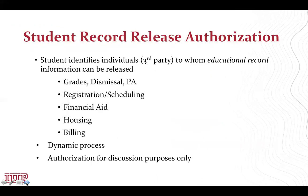How we do this is called the student record release authorization. Think of this as an online electronic permission form where students give permission for a third party person to discuss protected educational information. Access can be given to all or select categories of the educational record regarding grades, dismissal, grade point average, registration and scheduling, financial aid, billing, and or housing. I would like to caution everyone that this is a dynamic process. This means that access can be changed at any time — access could be granted in the morning and removed by that same afternoon.